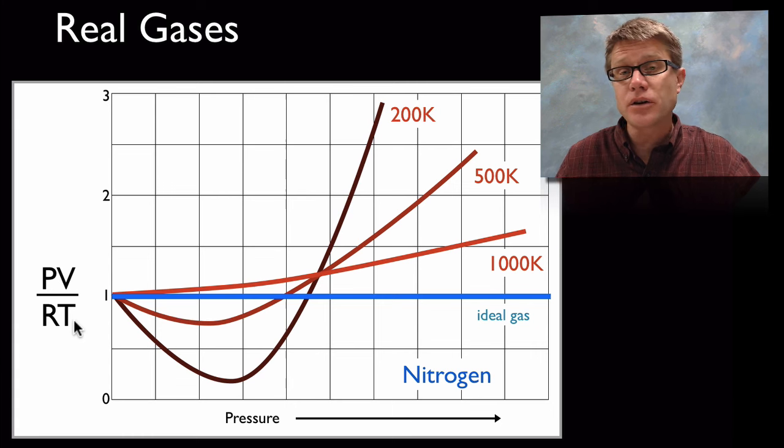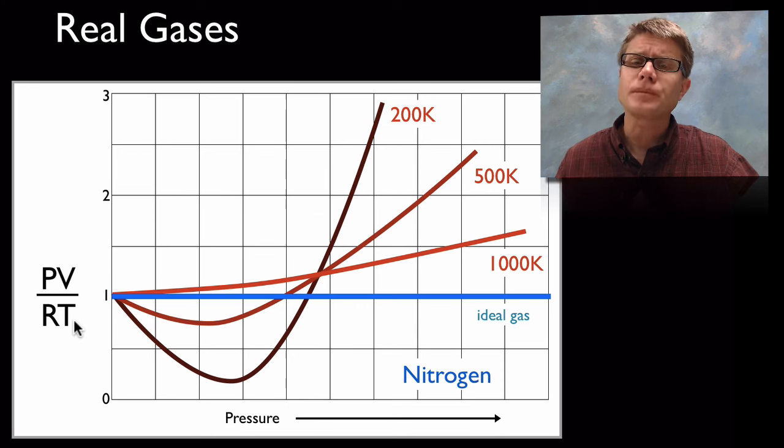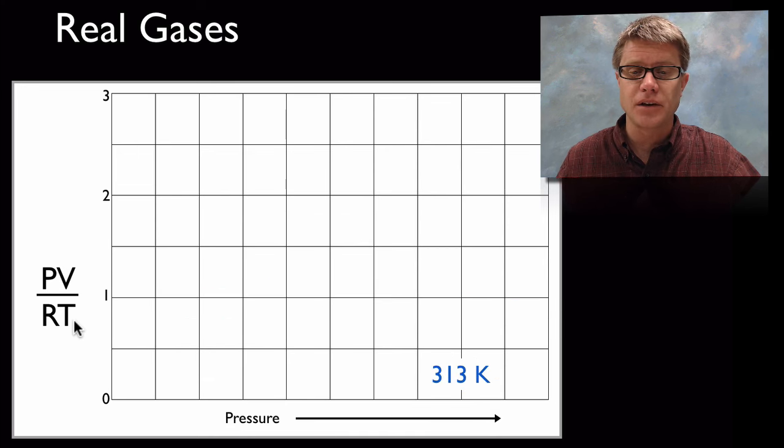The farther you are off that blue line, the farther you are off of an ideal gas. You can see that as we cool nitrogen down, as we get it closer towards that condensation point, that model of an ideal gas is falling apart.